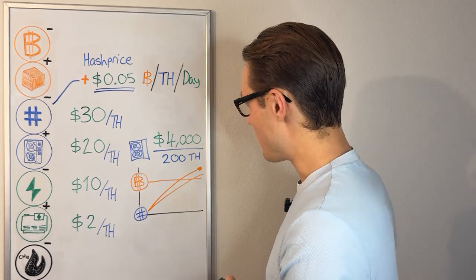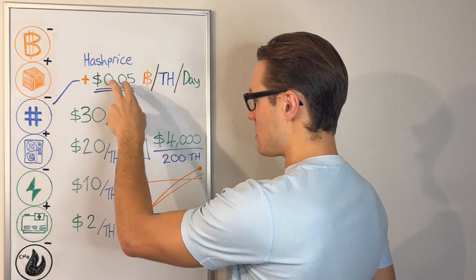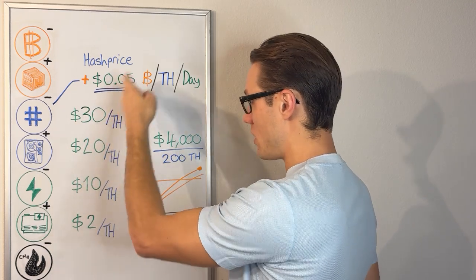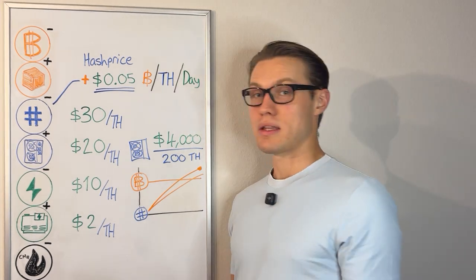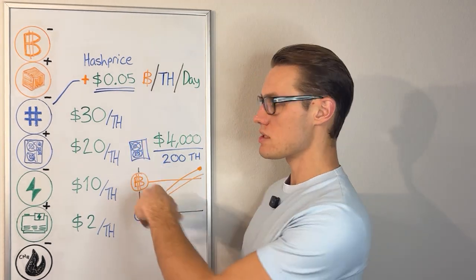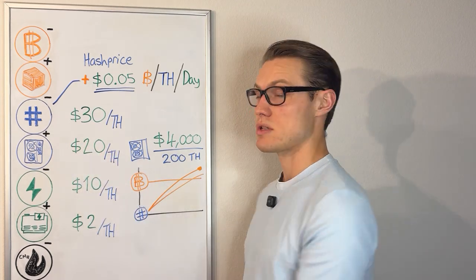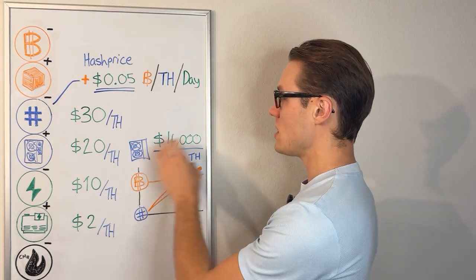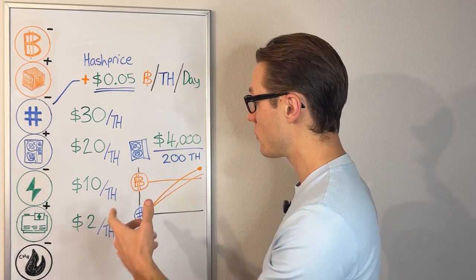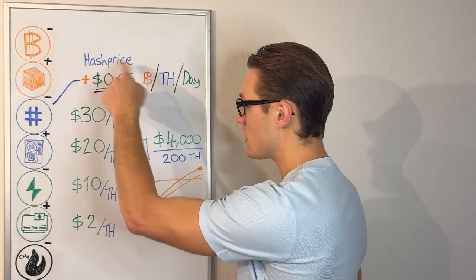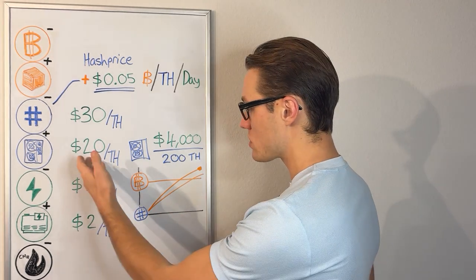How are the machines priced? What we are paid per terahash or what we are earning per terahash becomes that key comparison. Mining machines ASICs are priced in dollars per terahash. If a whole machine is $4,000 and produces 200 terahashes of performance, that boils down to $20 per terahash.